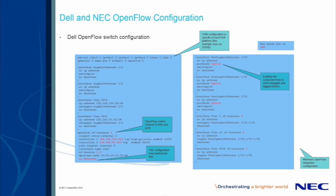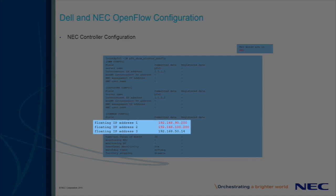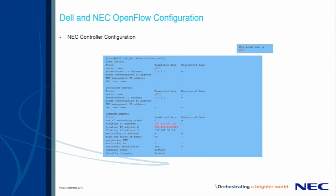In the next slide, we shall cover the NEC PFC configuration required to integrate with the Dell switch shown here. This slide shows the required configuration on the NEC PFC to integrate with the previous Dell OpenFlow switch. Using the proper PFC CLI utility, we can review the PFC's floating IP, or FIP, configuration. Note that there are multiple levels of high availability in this example. Each Dell OpenFlow switch has two configured sessions to the NEC PFC controller cluster. Two PFCs are configured in this example in an HA pair.